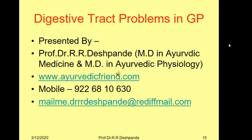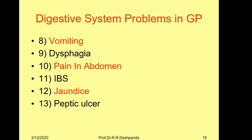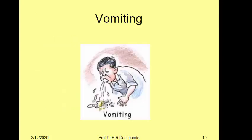Here we can see the digestive system problems: anorexia, indigestion, aerophagy or gas problem, stomatitis, hiccup, constipation and diarrhea, vomiting, dysphagia or difficulty in deglutition, pain in abdomen, IBS, jaundice, and peptic ulcer. We will start today with the vomiting problem.